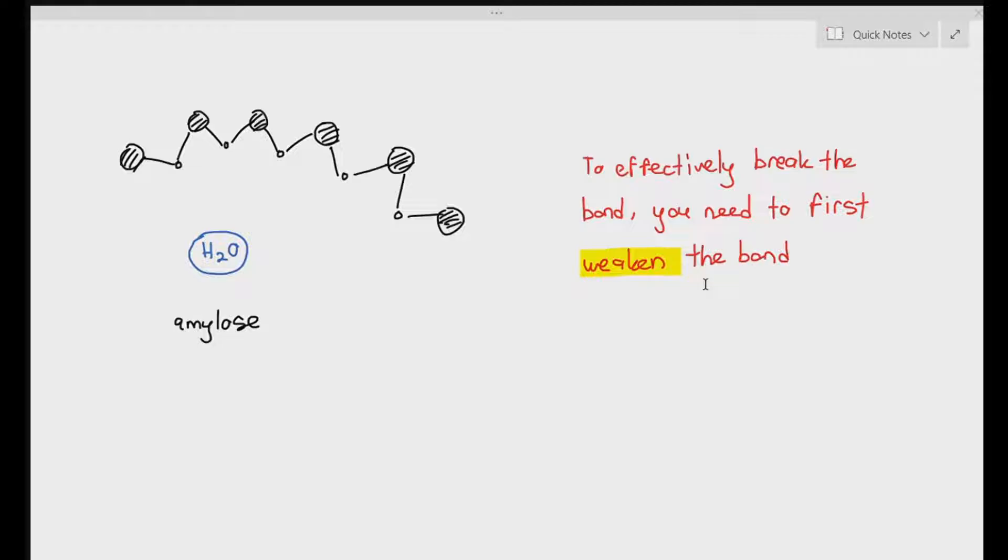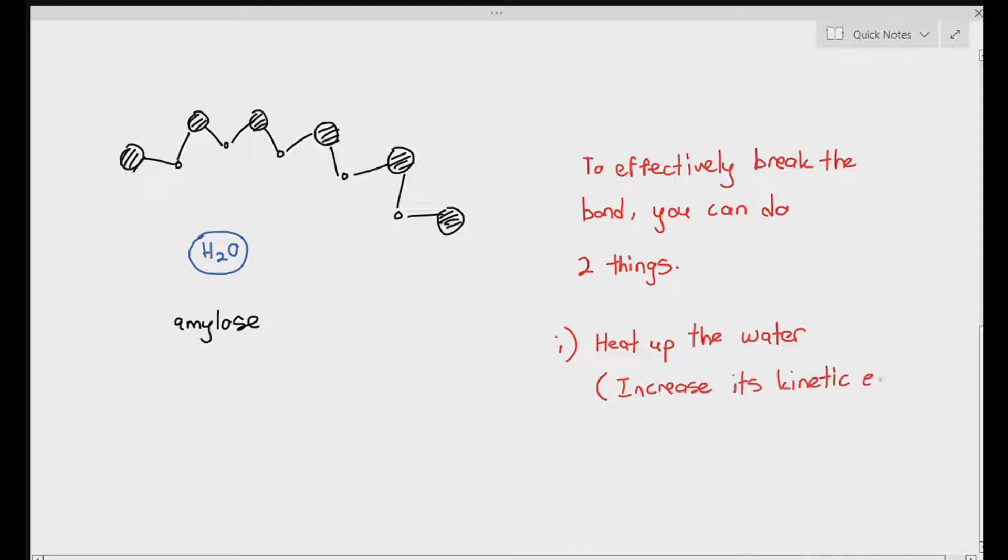So same thing with water too. If the water is to effectively break the glycosidic bond, the water needs to hit the glycosidic bond at a high energy level. So to effectively break the bond, you need water, but you need to heat the water up and increase its kinetic energy, and hopefully it will bash onto the glycosidic bond and break it.